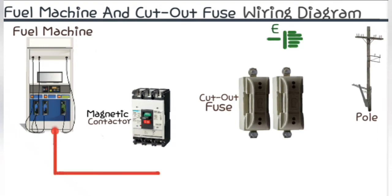The first thing I'm going to do now is pick my live, neutral, and earth from the machine to magnetic contactor. Everybody already knows that earth is common in any machine.